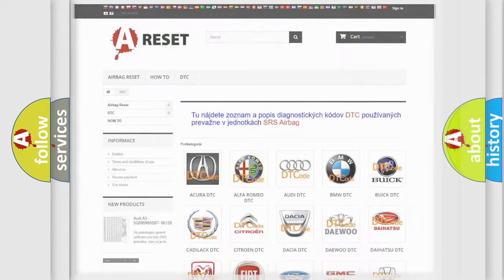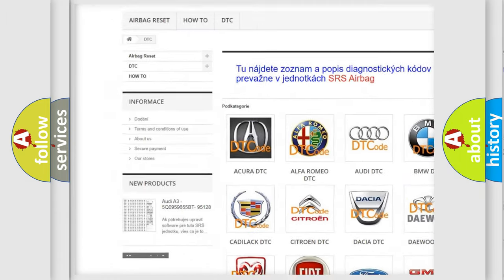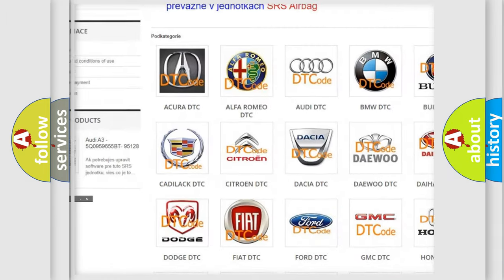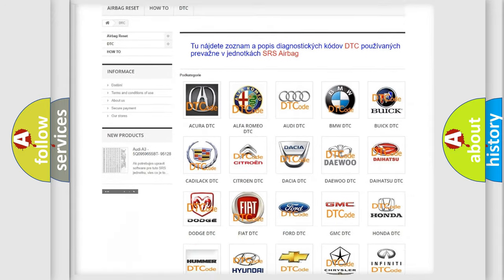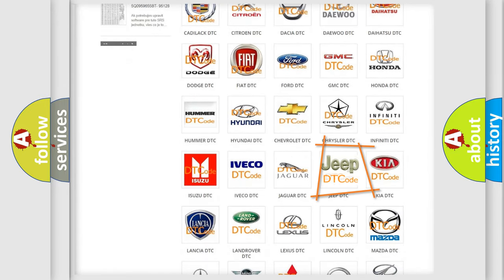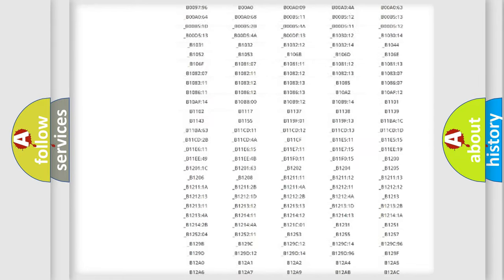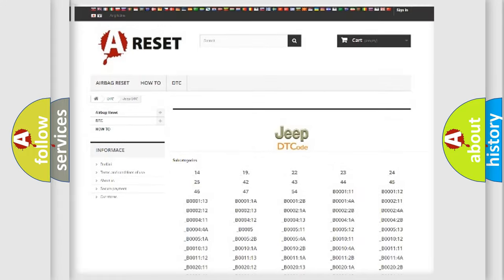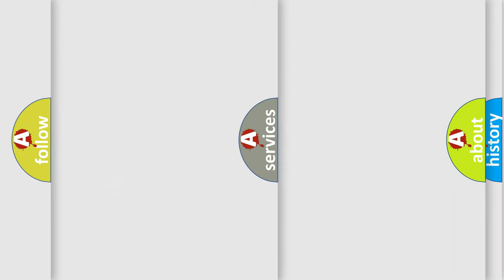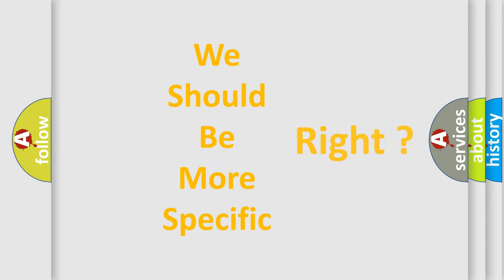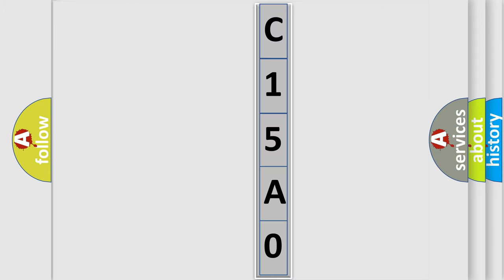Our website airbagreset.sk produces useful videos for you. You do not have to go through the OBD2 protocol anymore to know how to troubleshoot any car breakdown. You will find all the diagnostic codes that can be diagnosed in Jeep vehicles, and also many other useful things. The following demonstration will help you look into the world of software for car control units.